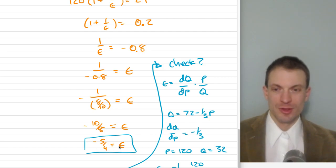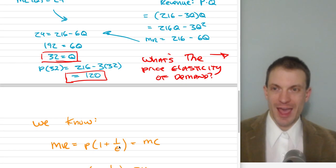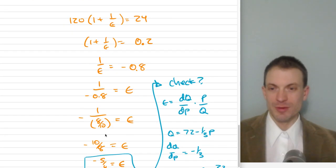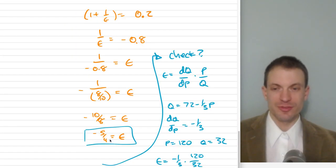It's our elasticity. So the price elasticity of demand at the monopoly's profit maximizing price and quantity is going to be 5 fourths, or minus 5 fourths.